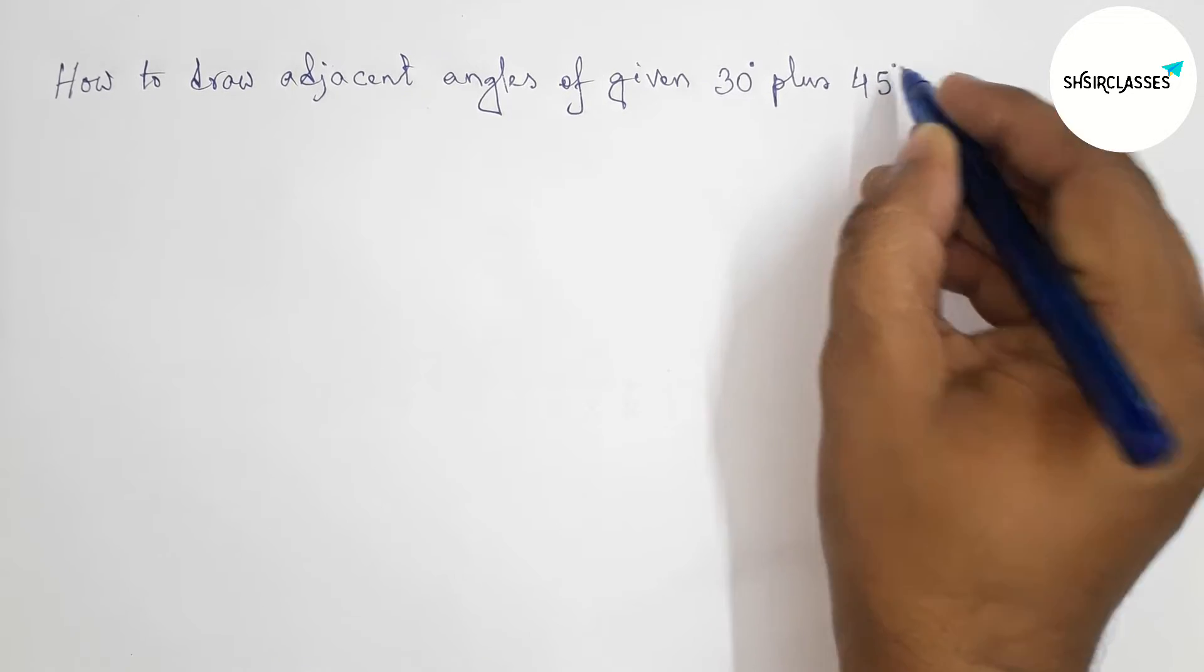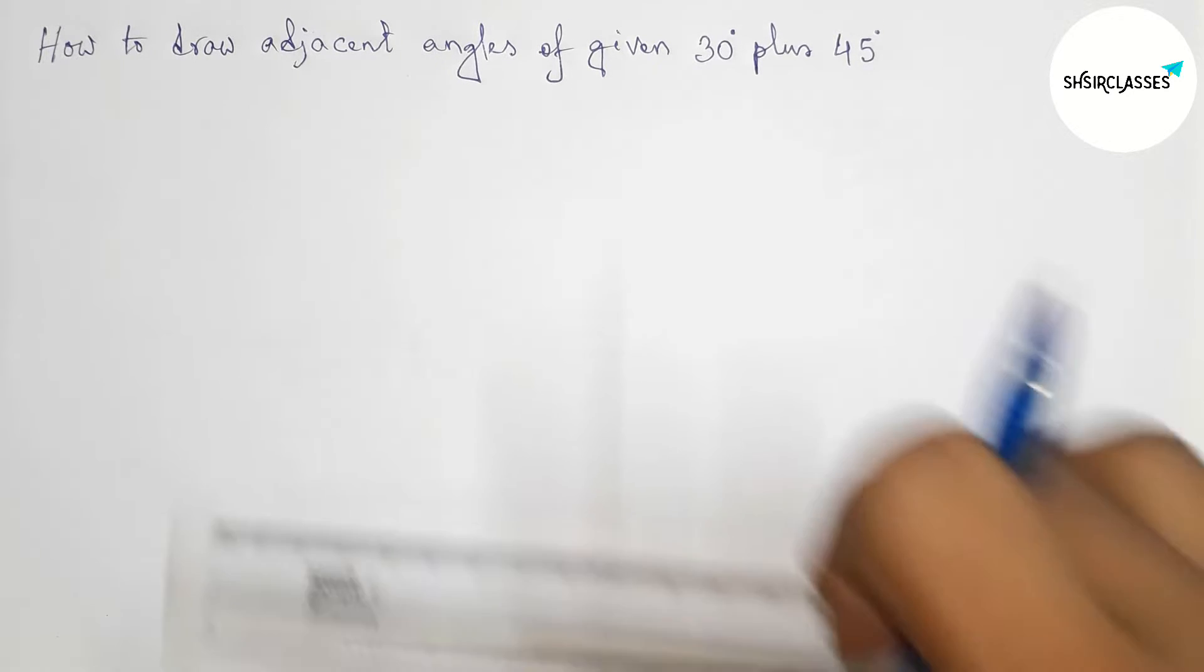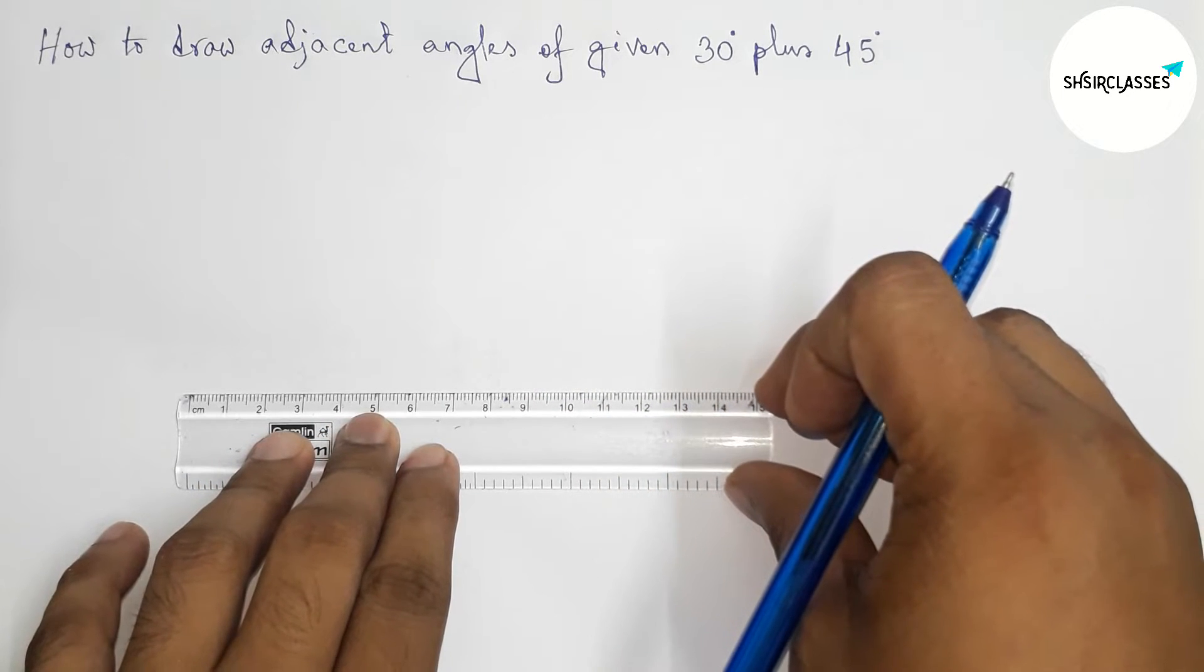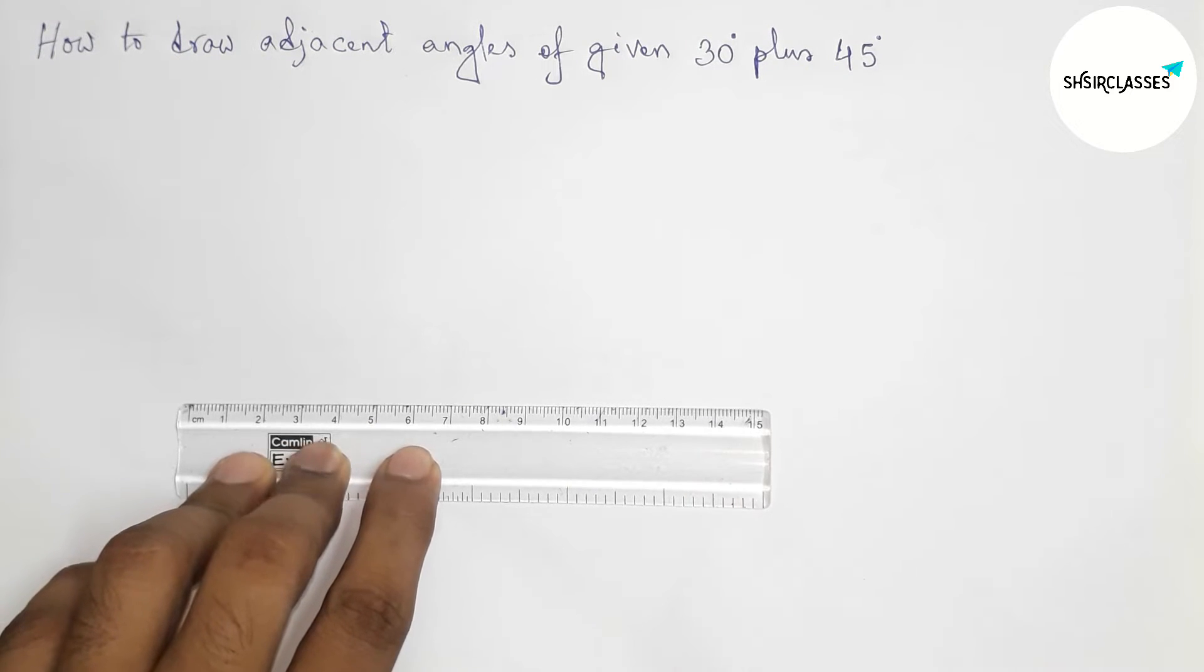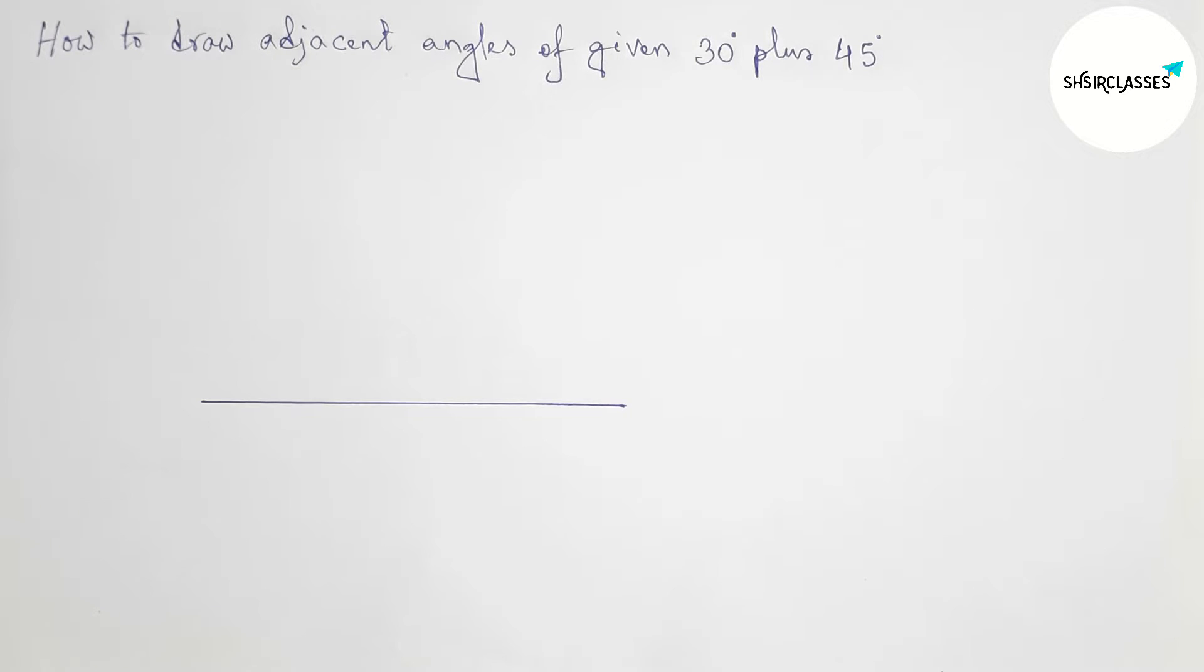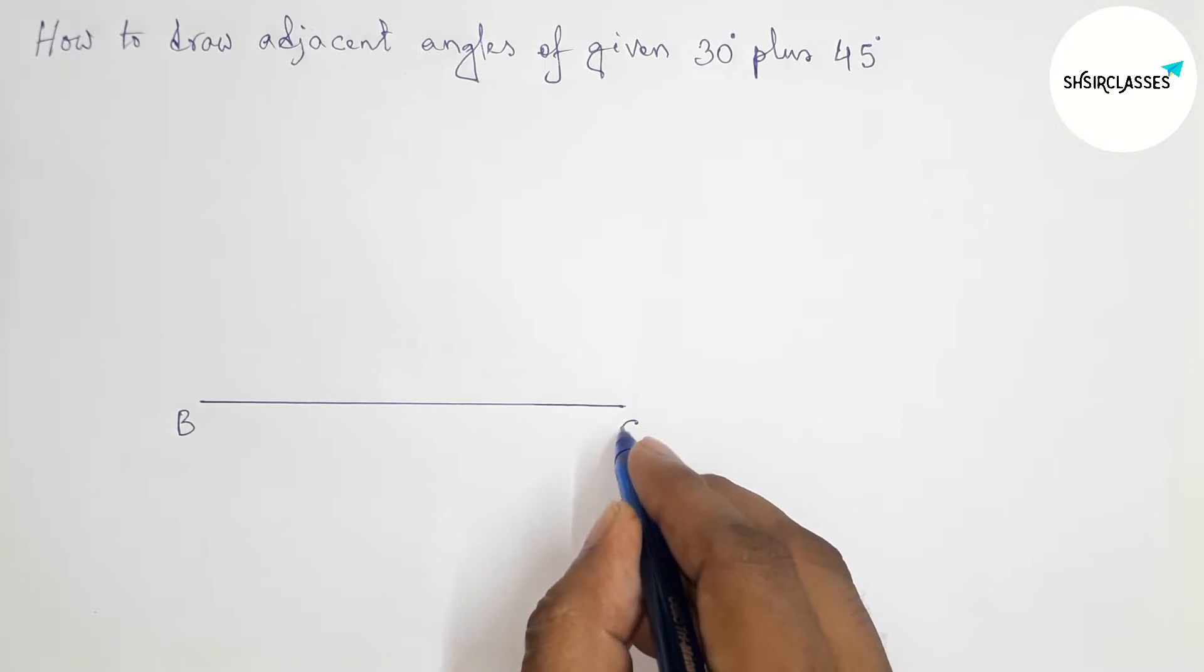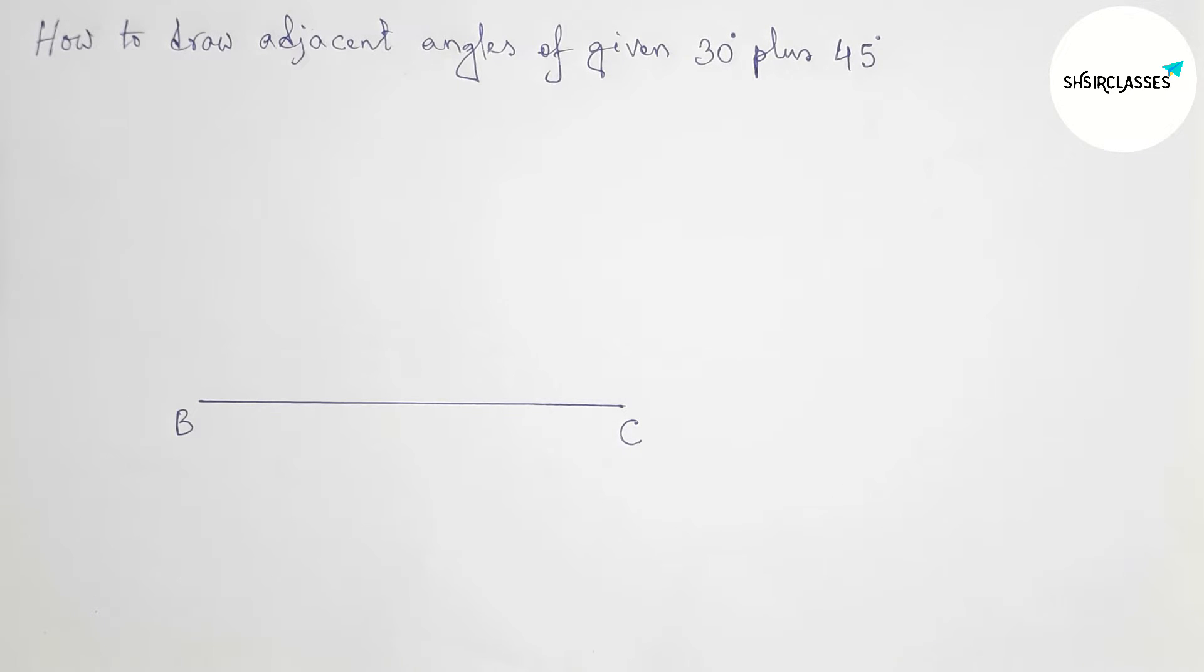First of all, let us draw here a line segment of any length. Drawing here a line segment, okay. Next labeling here, so taking point here B and here C. Now drawing 30 degree angle on the point B with the help of protractor.